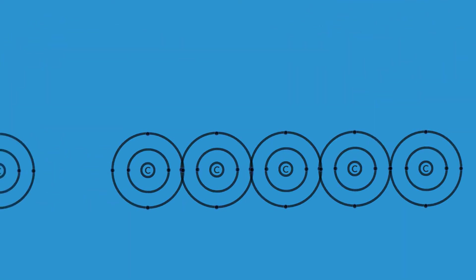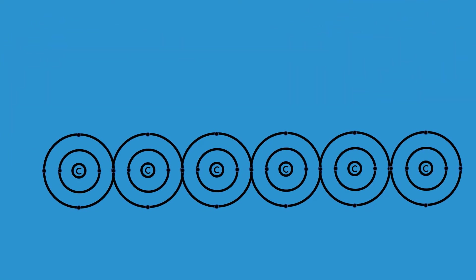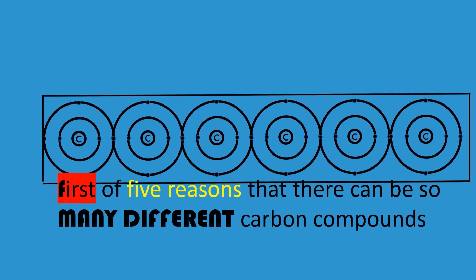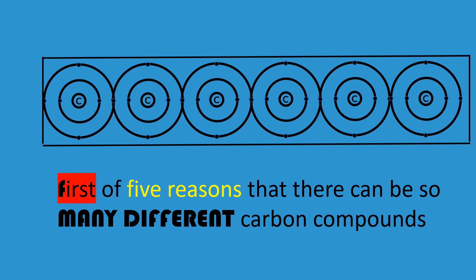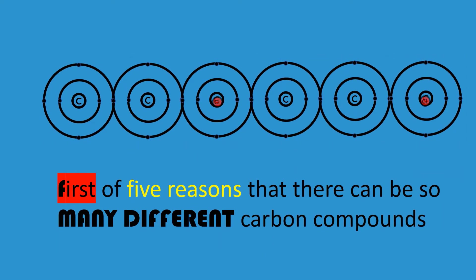Carbon's ability to form long carbon-to-carbon chains is the first of five reasons that there can be so many different carbon compounds. A molecule that differs by even one atom is, of course, a molecule of a different compound.